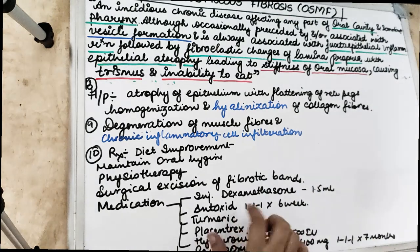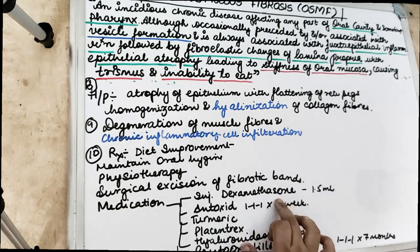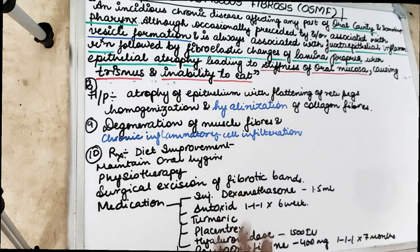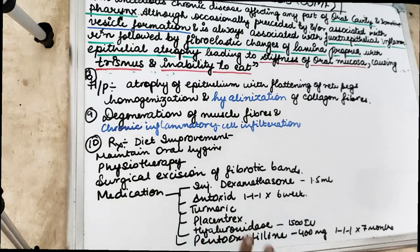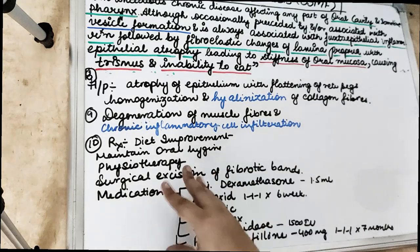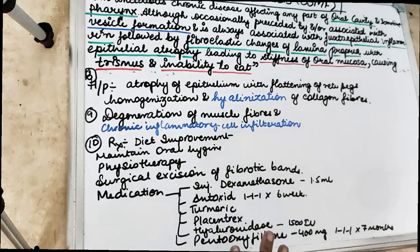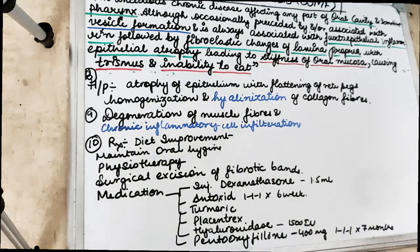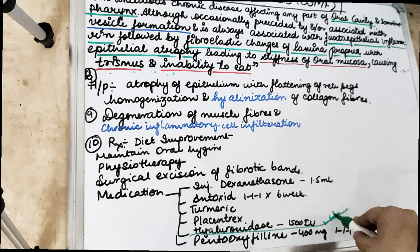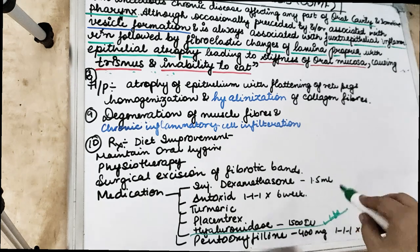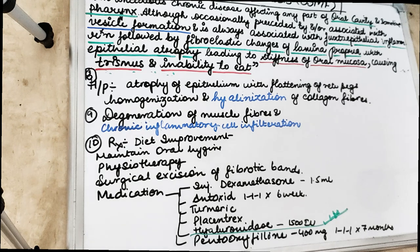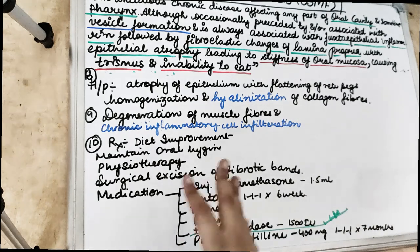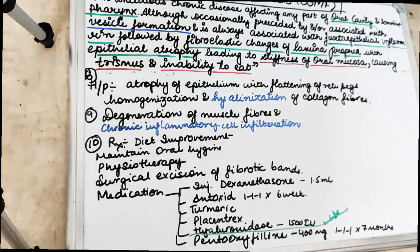Antioxidants like N-toxid (three times a day for six weeks) decrease the burning sensation and repress the fibrotic band. N-toxid contains beta-carotene, vitamin A, and palmitate. Turmeric with milk is also recommended as an antioxidant — it protects DNA and has anti-mutagenic properties. Placentrex, a solution of human placenta, can be given. Hyaluronidase, a fibrinolytic agent, is given at 1500 IU — it breaks down hyaluronic acid and decreases collagen fiber. Pentoxifylline, a methylxanthine derivative at 400 mg orally three times a day for seven months, acts as an immunomodulator, anti-inflammatory, and vasodilator.